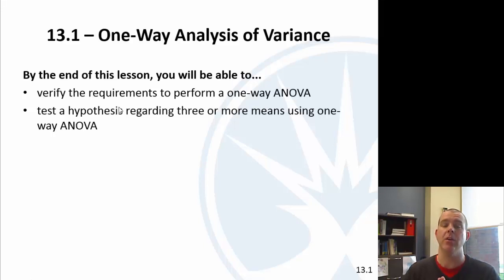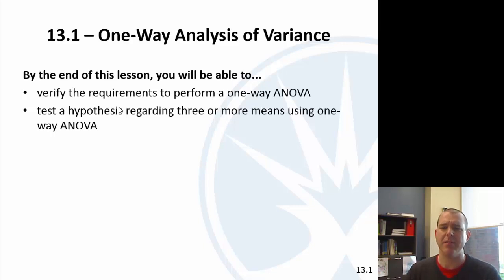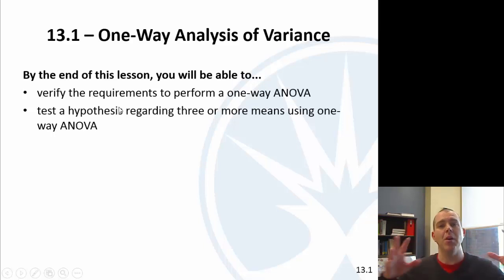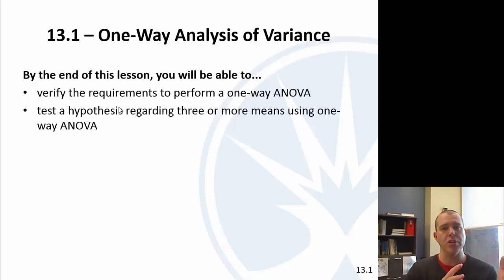This is our last video of the semester — the last section we're going to cover. It's called one-way analysis of variance, which we abbreviate as ANOVA. Analysis of variance is really a way to analyze and compare different population means. We're going to test hypotheses regarding three or more means, so we're looking at multiple populations and comparing all of their means. Much like the proportion test from 12-2 where we had multiple proportions, now we're comparing multiple means, so we're going to build up some theory.